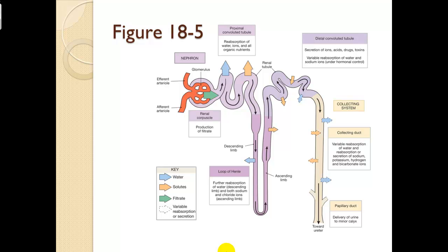Figure 18.5 shows the nephron. The glomerulus receives blood via the afferent arteriole on the input side and exits via the efferent arteriole. The pressure exhibited here starts the filtration process. When filtration starts, the filtrate enters the proximal convoluted tubule and at this point resembles plasma. In the proximal convoluted tubule, reabsorption of water, ions, and all organic nutrients takes place — if we want it, now is the time to get it.